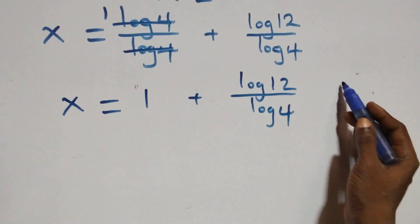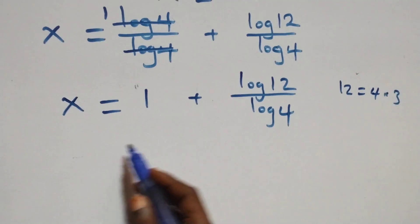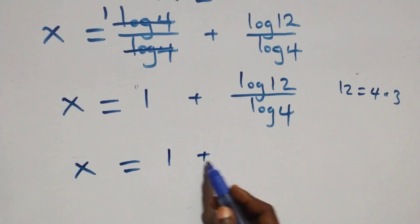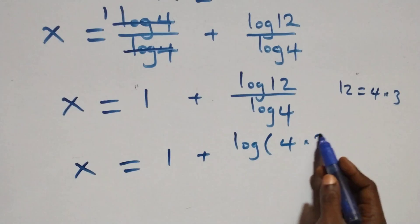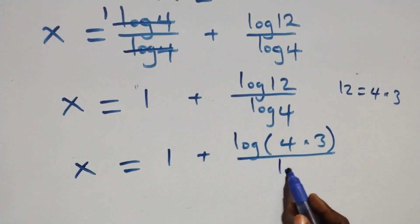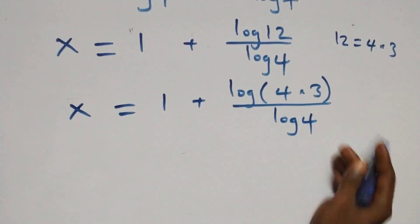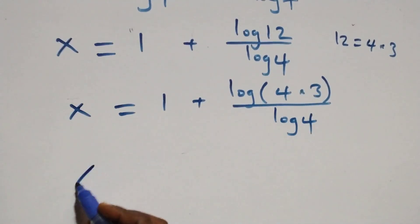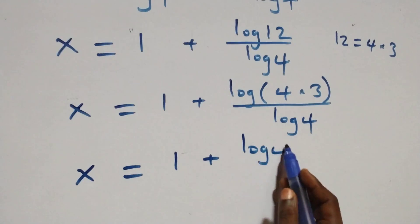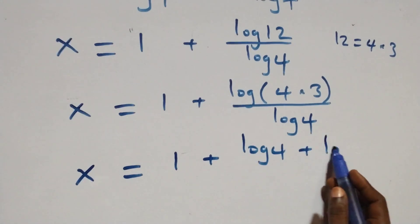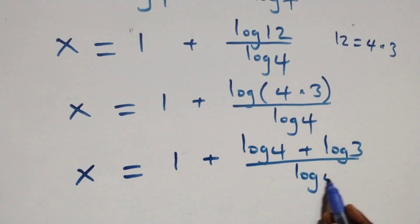Also here, 12 is the same thing as 4 times 3. And this becomes x equals to 1 plus log of 4 times 3 over log 4. This also follows from the law of logarithm, and what we have here becomes x equals to 1 plus log 4 plus log 3 over log 4.